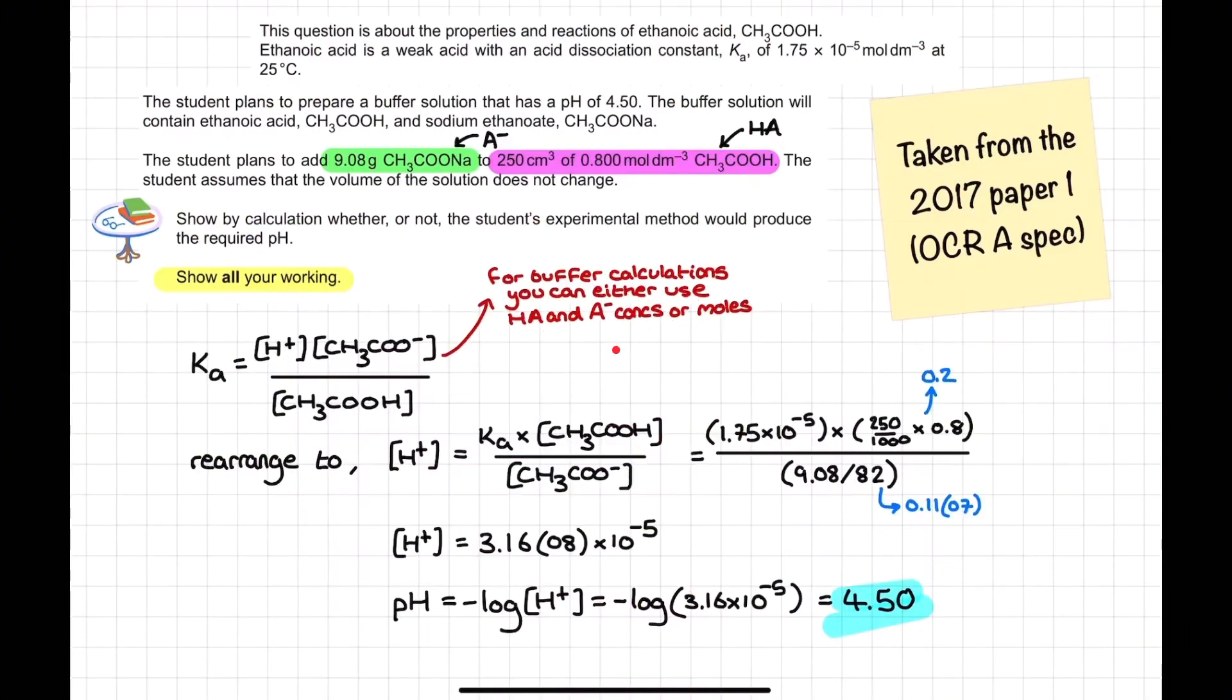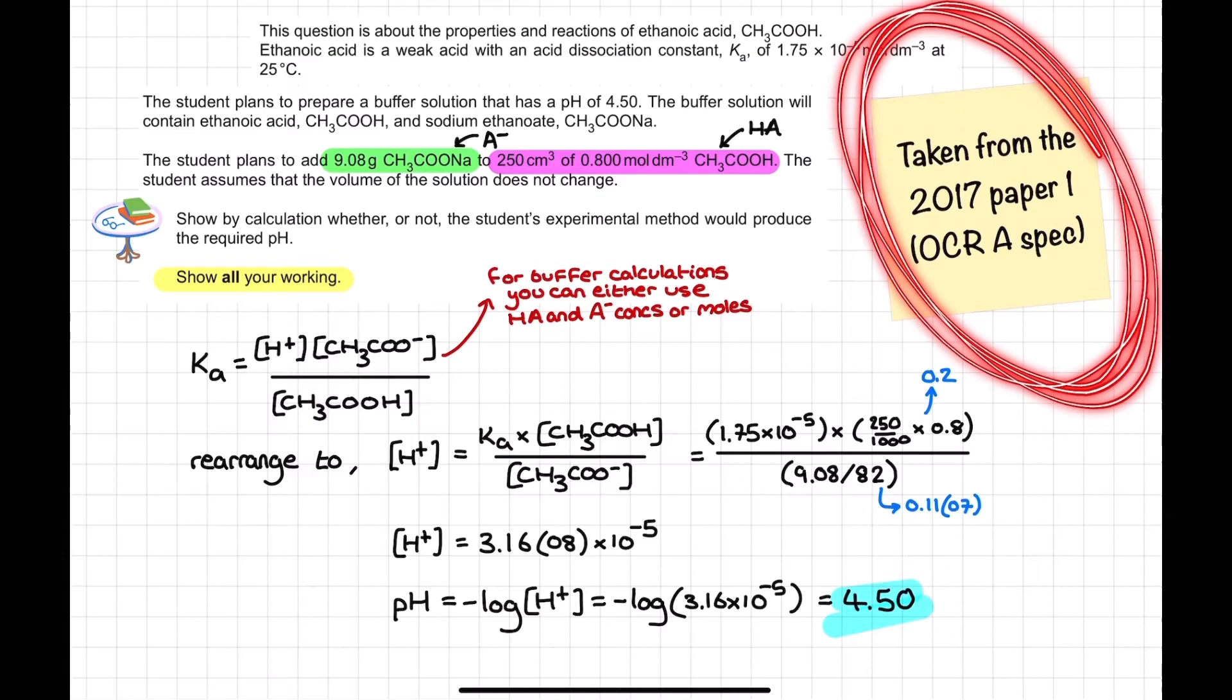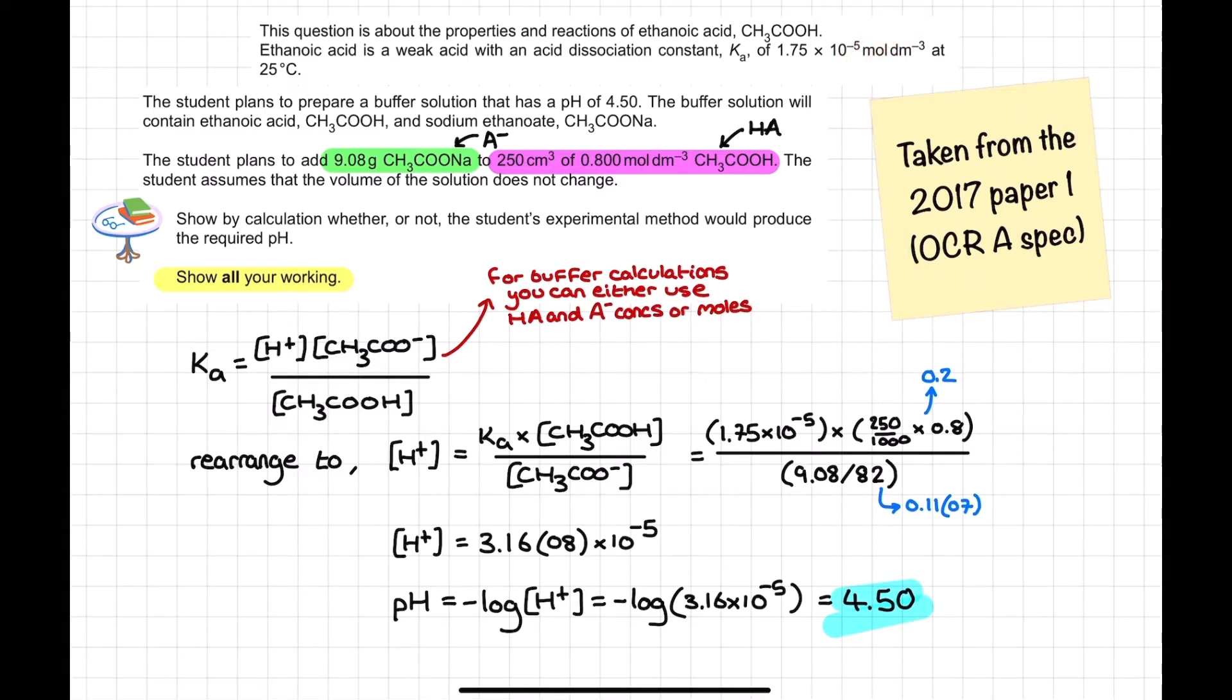The reason we did use H+ squared previously in weak acid calculations is because the numerator here of H+ and the conjugate base, in this case the CH3COO- that ethanoate ion, they have the same concentration because their only source in a weak acid solution is from the dissociation of this weak acid. However, now since I have an additional source of this conjugate base from the sodium salt of the weak acid, I can no longer make that approximation. Let's see the equation in action. I've taken this question from the OCR A-level 2017 paper one examination, and the question has tasked us with essentially proving that the setup a student intends to use is going to create a buffer solution with a pH of 4.50.